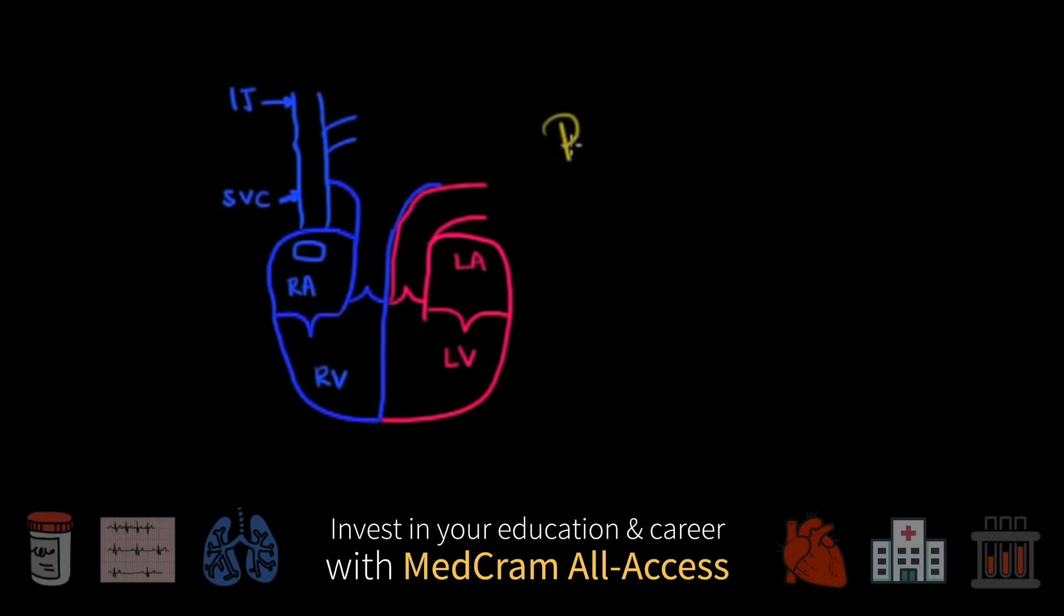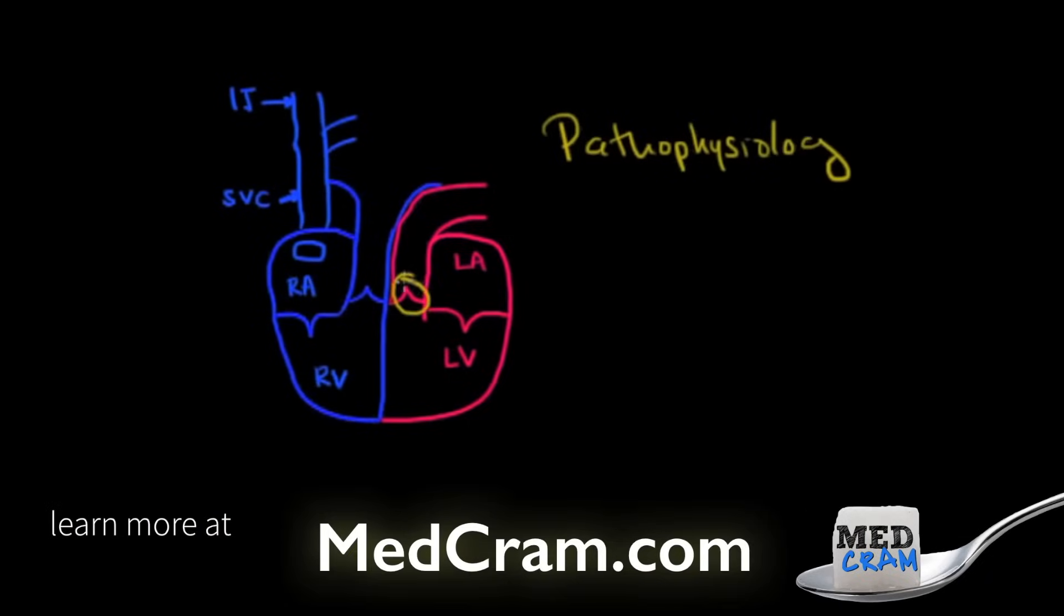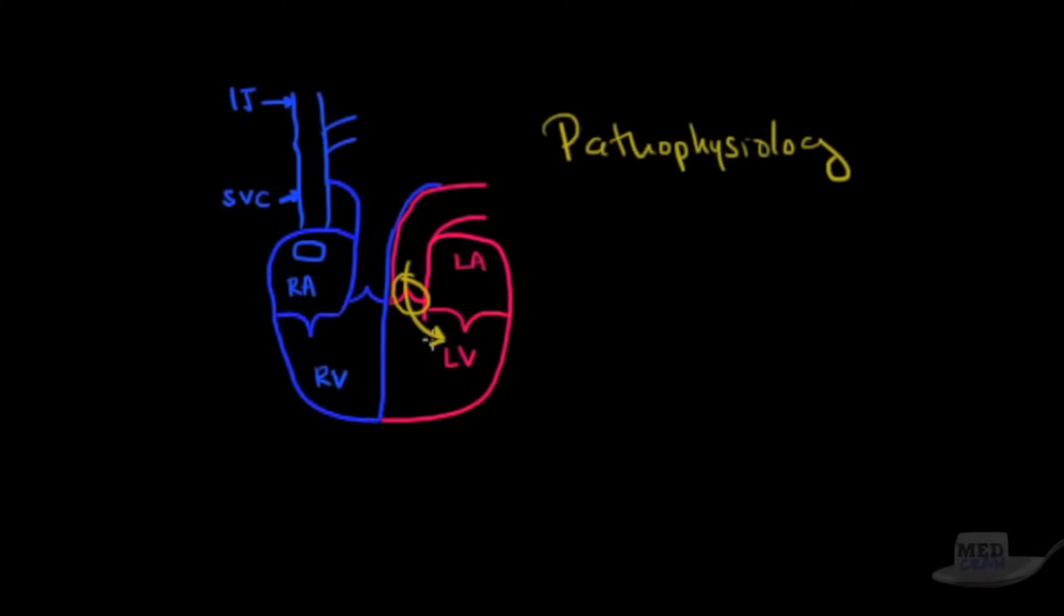So the pathophysiology of this is that this valve, the aortic valve, becomes leaky and blood goes back into the left ventricle. And this occurs, of course, during diastole. So it's diastolic. That means between S2 and then at the beginning of S1 again. As a result of that, it's going to cause the left ventricle to become bigger because blood is coming back in.